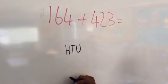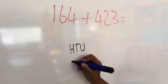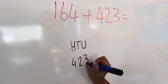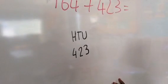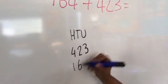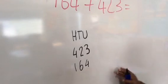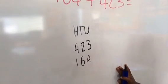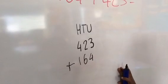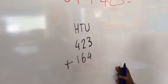Then we have to put the biggest number in first. Then we put in the smallest number and we add the plus sign over here. Then we underline it.